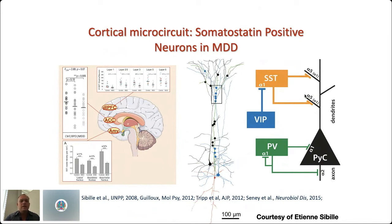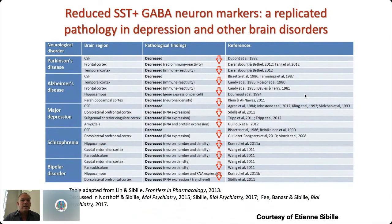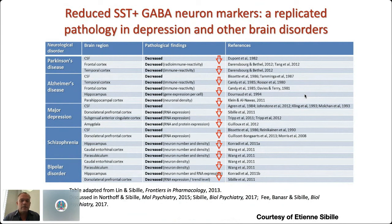The somatostatin-positive interneurons are a key interneuron within the cortical microcircuitry that provides inhibition onto the dendritic tufts of the pyramidal cells. This alteration in major depressive disorder is also found across many different disorders. There are reduced somatostatin GABAergic neuron markers across Parkinson's disease, Alzheimer's, major depression, schizophrenia, and bipolar disorder — all showing, in varying ways, either decreased neuron number and density or decreased expression of somatostatin.